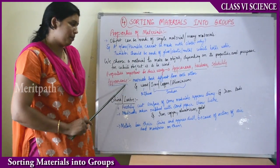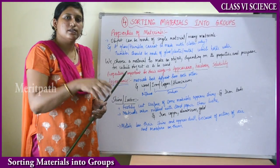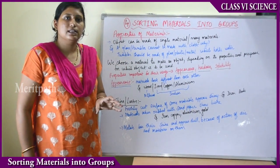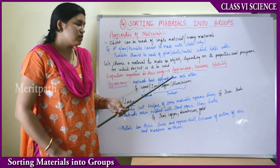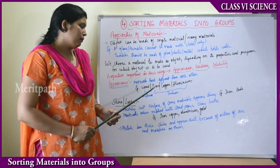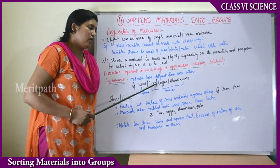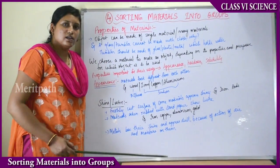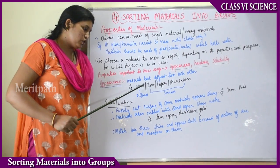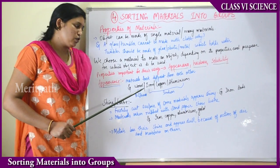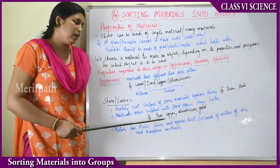Appearance means what you see with your eyes — the first thing you observe about any material at first sight. Materials look different from each other. For example, wood is brownish in color and hard to touch. Iron, copper, and aluminum are different in color and different to touch — some will be hard, some very soft. There is a difference in the form and appearance of wood, iron, copper, and aluminum.